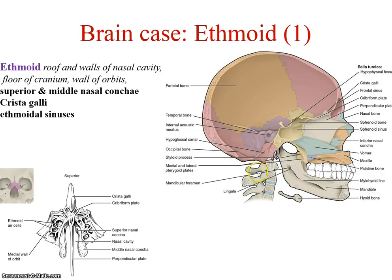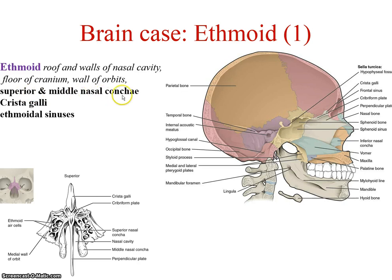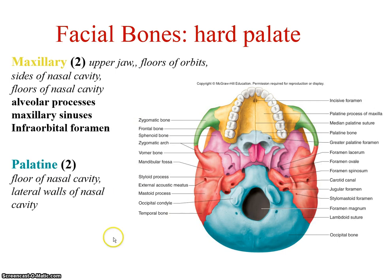The ethmoid bone is the last part of the cranium. It creates the nasal septum — here's what it looks like on its own, a pretty cool-looking bone. It has sinuses, so now we have frontal, sphenoidal, and ethmoidal sinuses that all open to the nasal cavity. It has a structure called the crista galli, which means the coxcomb — like a rooster's crown — where the meninges of the brain attach anteriorly. It also has the superior and medial conchae, which are ridges that project into the nasal space. On the next video, we'll talk about the facial bones.